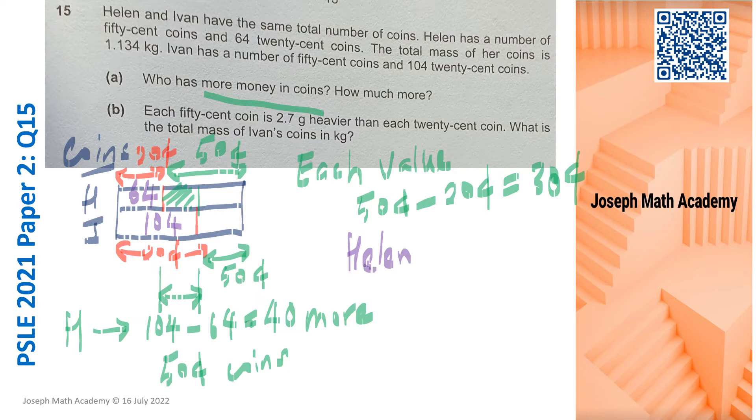Let's find out how much more money she has than Ivan. Since she has 40 more coins and the difference in value is 30 cents, she has actually 12 dollars more than Ivan. So part A is completed. Part A is actually quite easy.